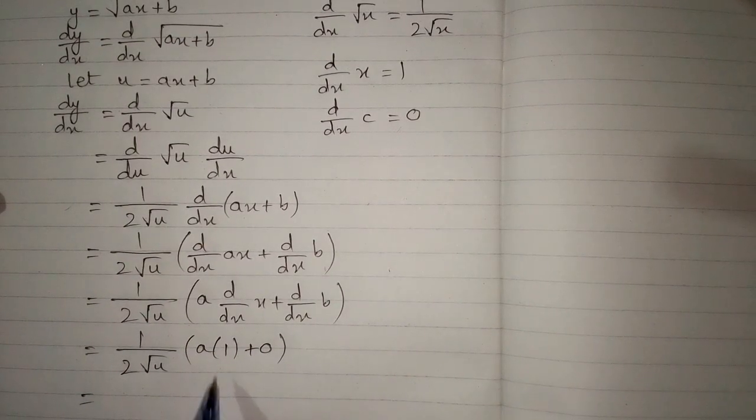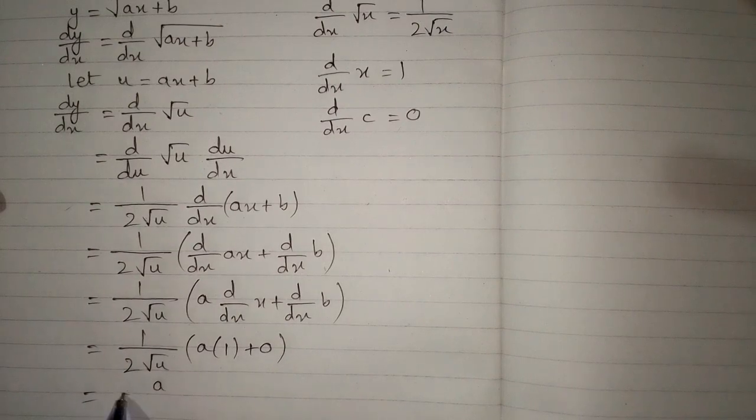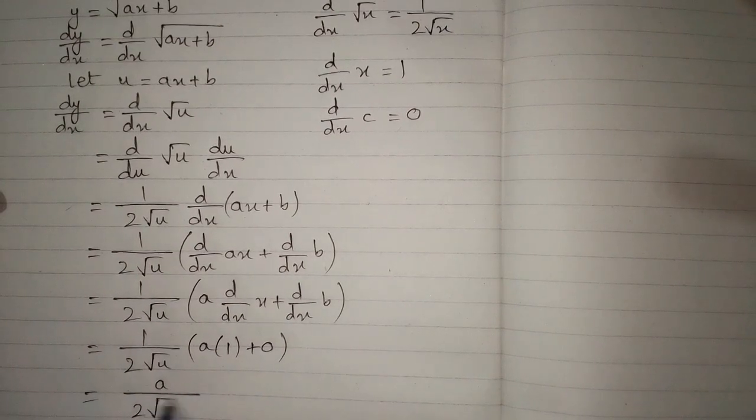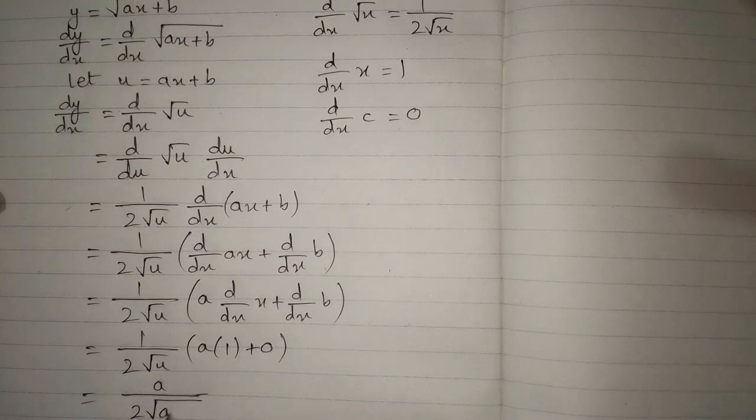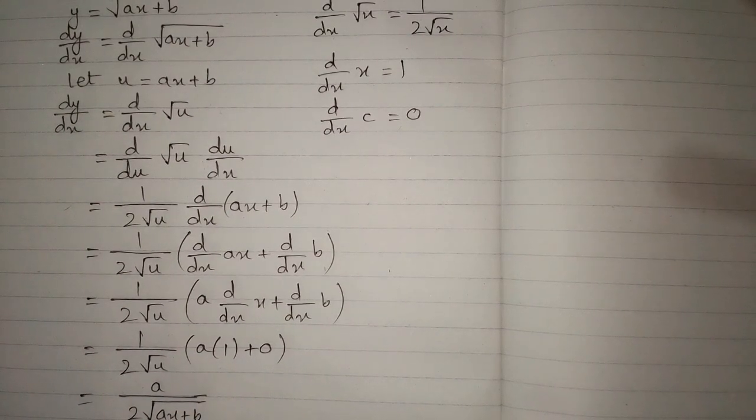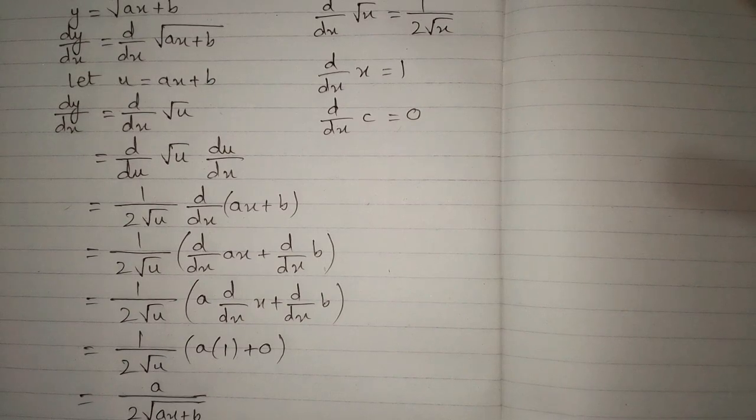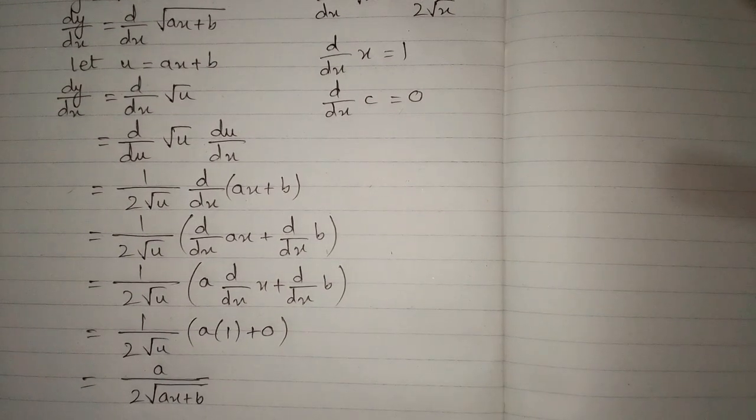Now a times 1 is a so we have a upon 2 square root of u. And now we can put the value of u which is ax plus b. So the required answer is a upon 2 times square root of ax plus b.